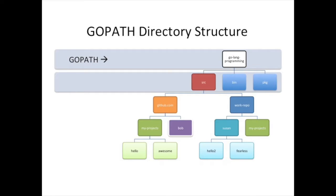Let's work from the bottom up in this diagram. Say you're writing a number of projects in Go — a hello world, some awesome project, and so on. You want to group those together in your project directory. You might also be working with your buddy Bob, who is sharing some code with you — either a plugin or an actual application. His projects sit in a parallel directory to yours, each with their own set of projects.